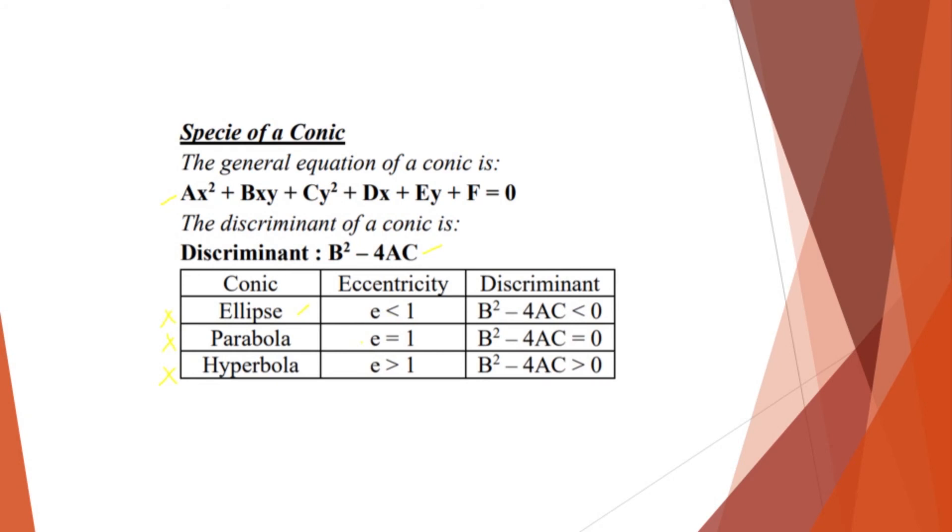So when your eccentricity is equal to 1, then your conic is a parabola. Then if your eccentricity is greater than 1, then your conic is a hyperbola. So in here, the same with the eccentricity. So if the discriminant is less than 0, then your conic is an ellipse. Then when your discriminant is equal to 0, then your conic is a parabola.